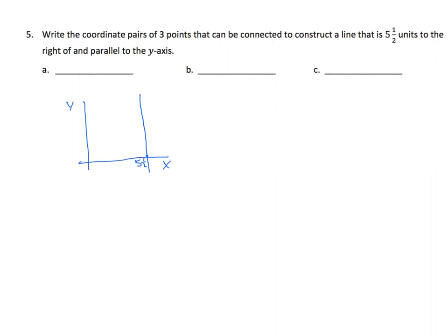So what does that tell me? That tells me my value for X has to be 5½ in all cases. So whatever I have for X, it has to be 5½. And I can choose any value for Y that I like. They'll all work.